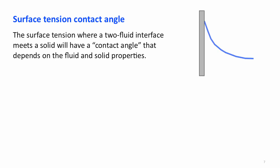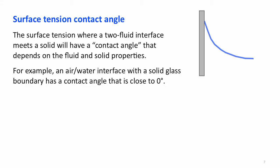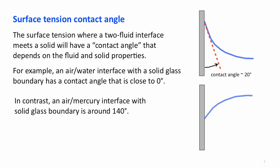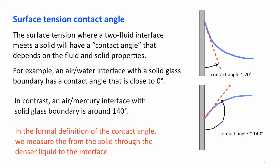Surface tension along a solid always acts at some contact angle. The contact angle depends upon both the fluid and the solid properties. For example, if we have an air-water interface with solid glass, we have a contact angle close to zero degrees. The example shown has a contact angle of about 20 degrees — zero degrees would be the dashed red line straight up and down along the wall. We also have contact angles that work in the opposite direction: an air-mercury interface with a solid glass boundary has a contact angle of 140 degrees. The formal definition of the contact angle is measured from the solid through the denser liquid to the interface.